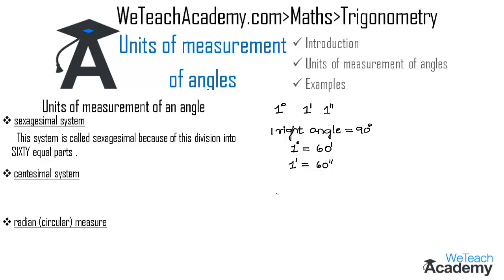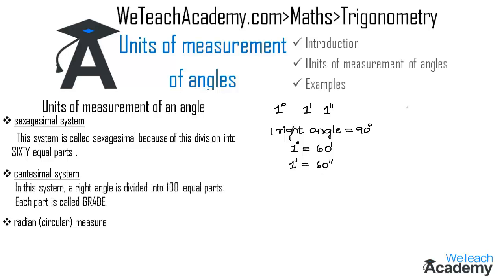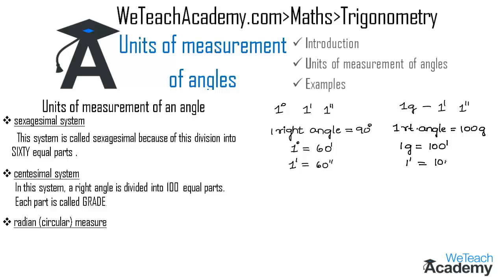Coming to the centesimal system: in this system, a right angle is divided into one hundred equal parts, each called a grade. A grade is divided into one hundred equal parts, each called a minute, and each minute is further divided into one hundred equal parts called seconds. Thus: one right angle = 100 grades, one grade = 100 minutes, and one minute = 100 seconds.